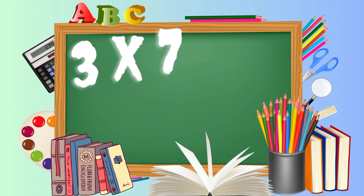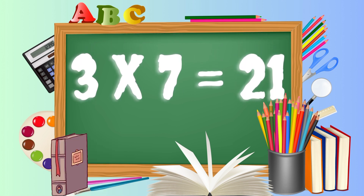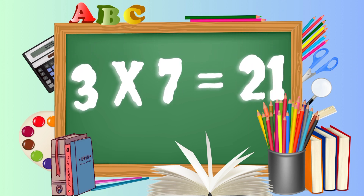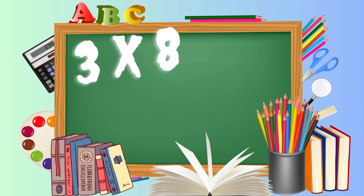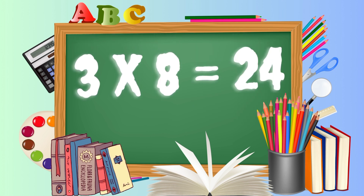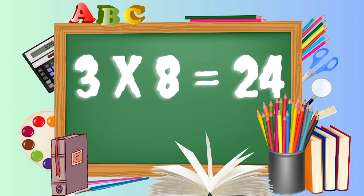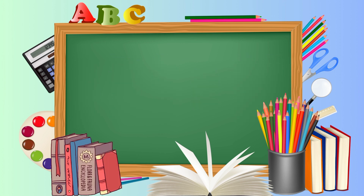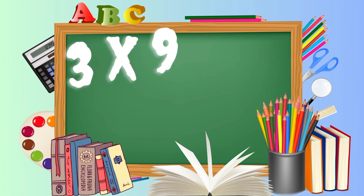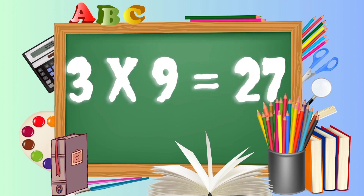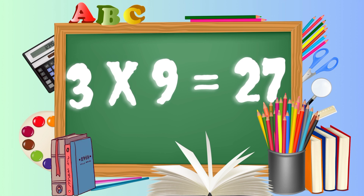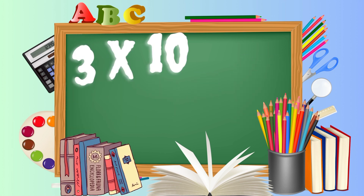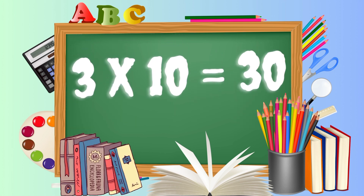3 7's a 21. 3 8's a 24. 3 9's a 27. 3 10's a 30.